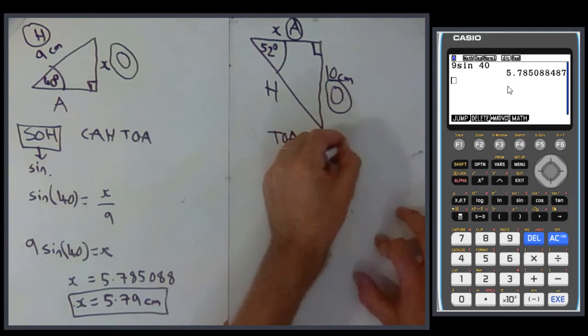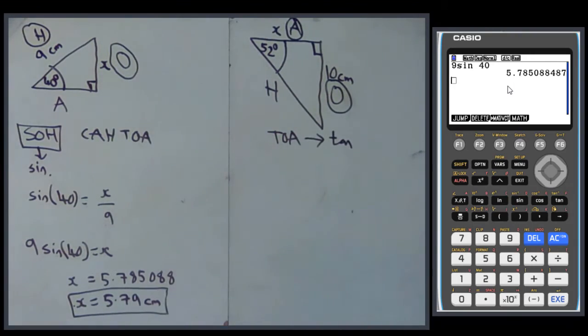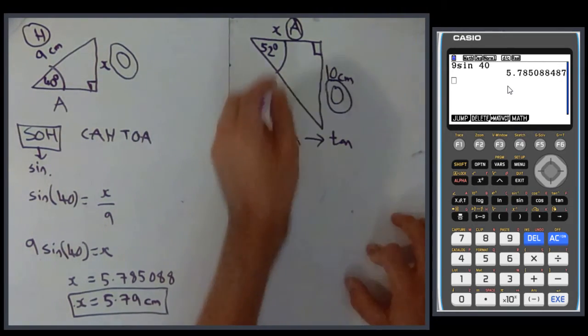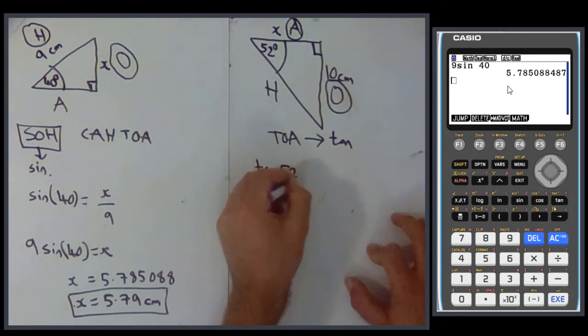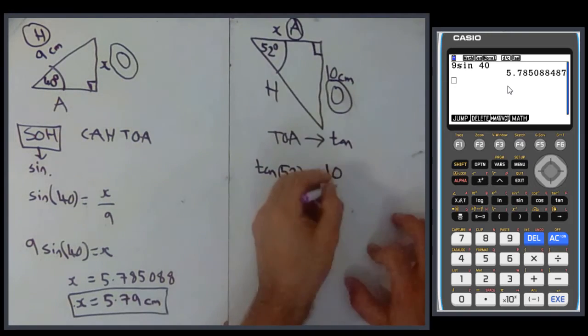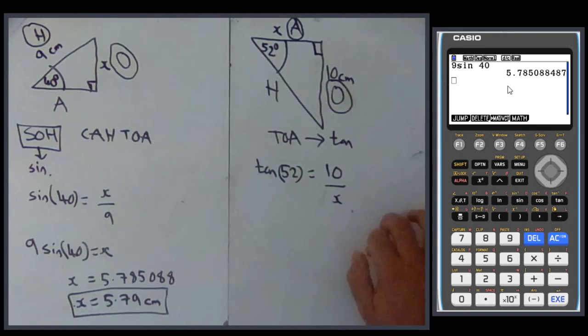TOA means tan. And tan means tan angle equals O over A. So tan 52 equals O, which is 10, over A, which is x.